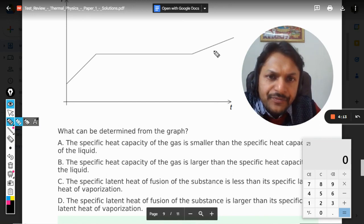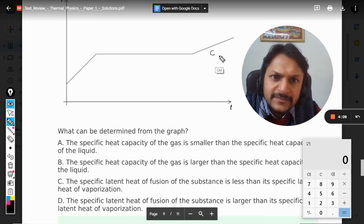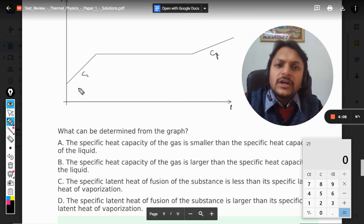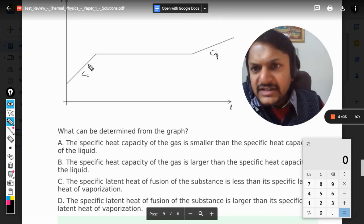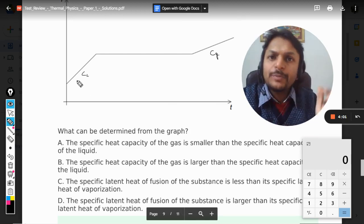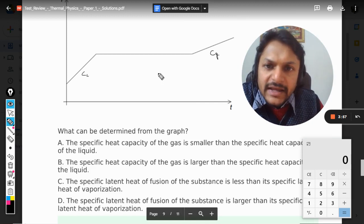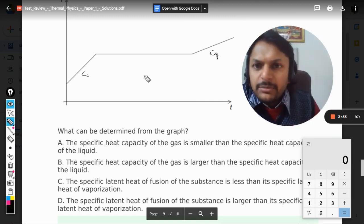So it means that these options want to compare specific heat of gas and specific heat of liquid. We know that if the slope is more, the specific heat is lesser. The energy is given at the same rate. Let us do it like that.